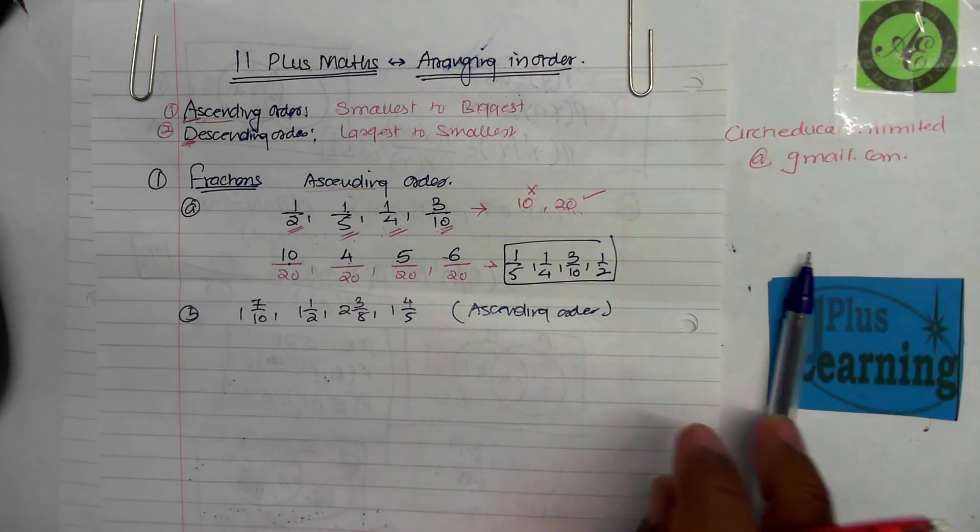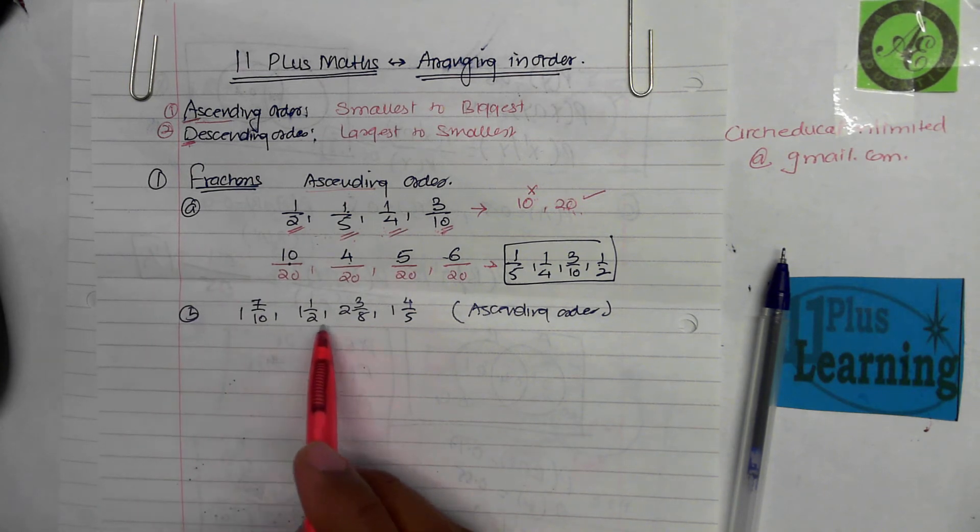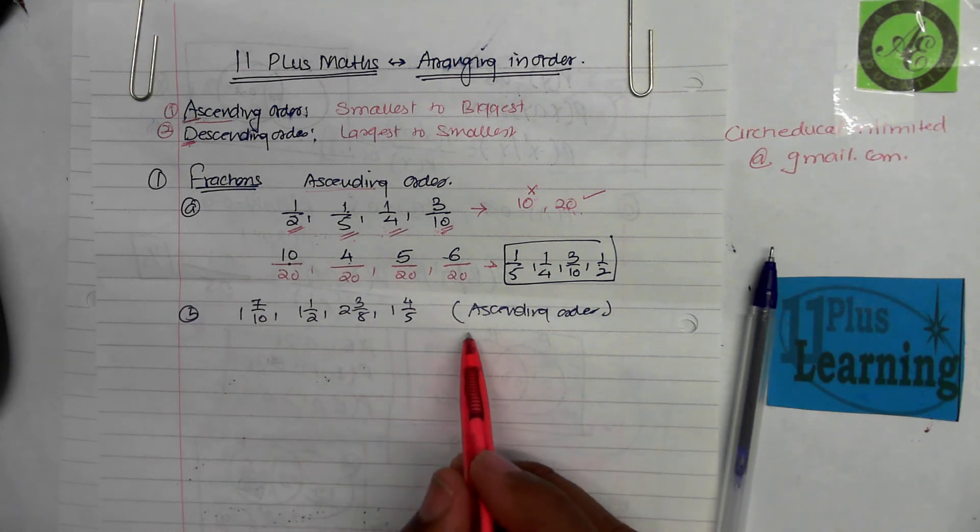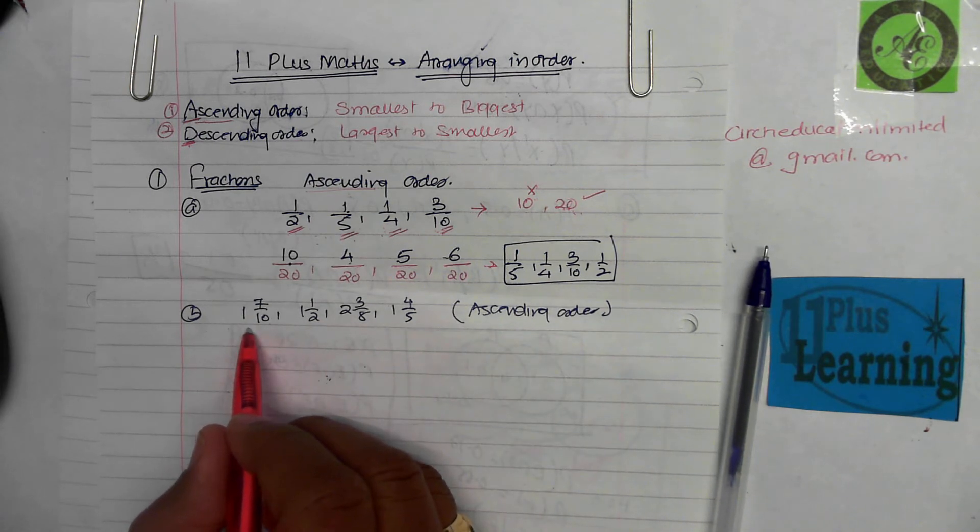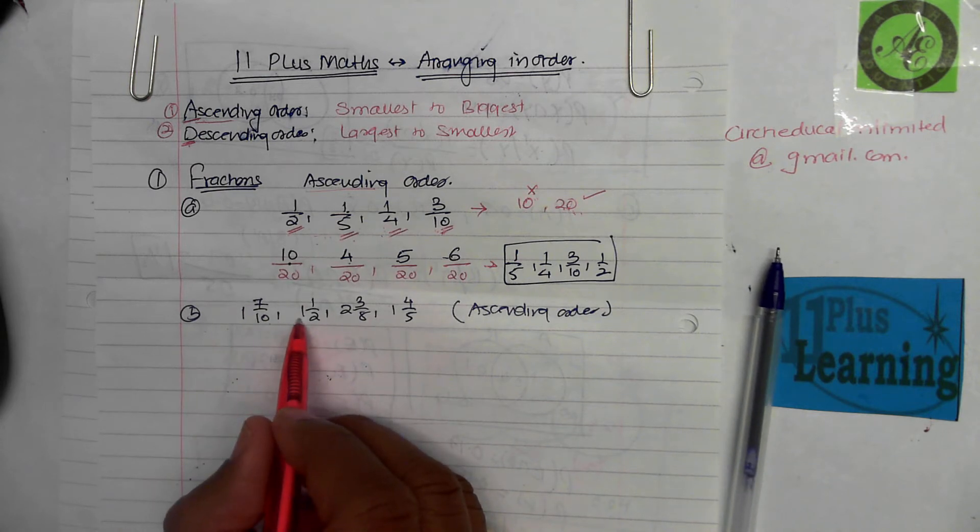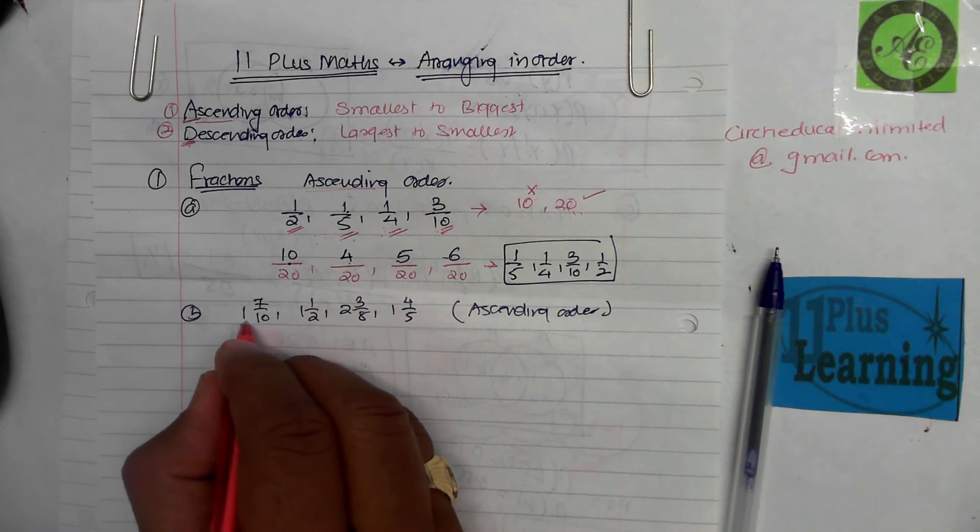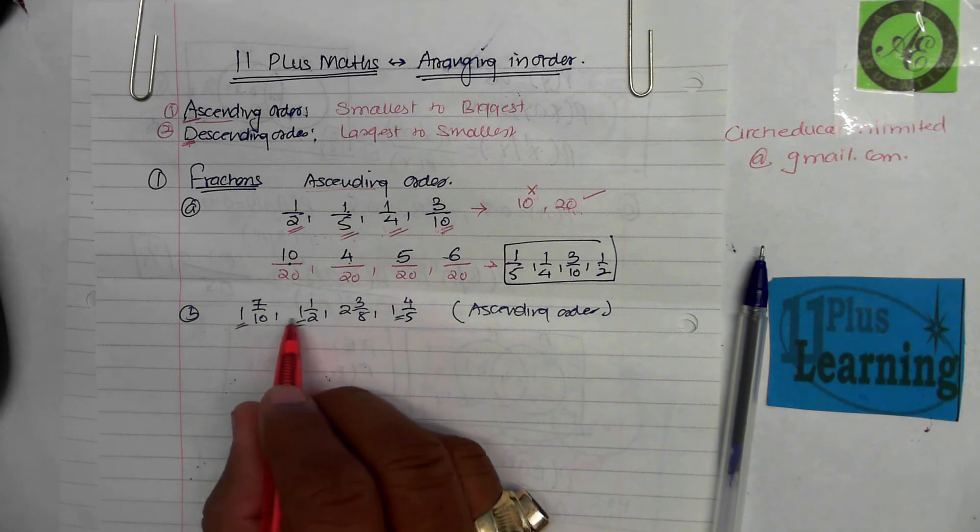Question number two. The second question is fractions again, that's why it's one B. The fractions are mixed numbers now. Once again, ascending order. What you can do is compare the fractions by changing them into improper fractions, or the clever step here is check: this is one whole, one whole, and one whole. So we can just ignore these wholes and work on these proper fractions.